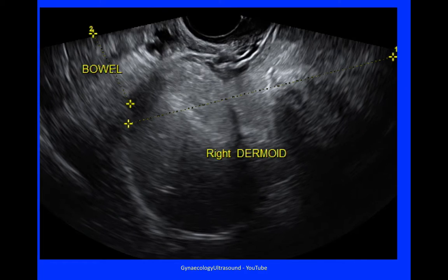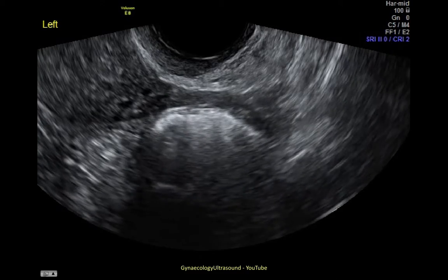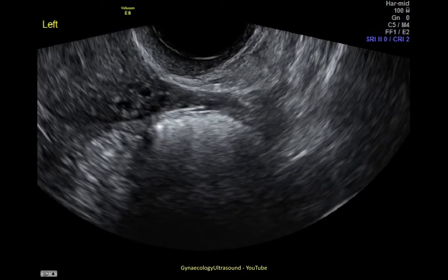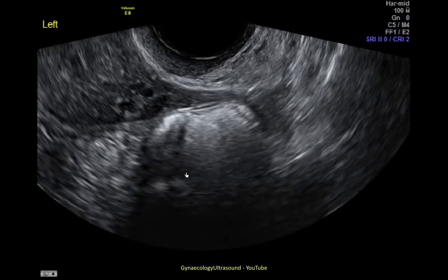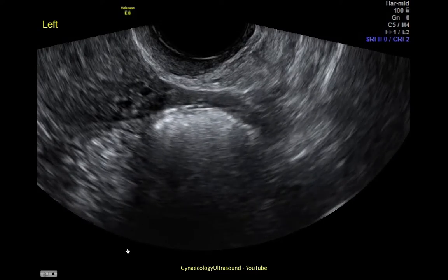A dermoid can mimic bowel. This was a 140mm dermoid — it was unilocular with mixed echogenicity and minor vascularity. You can see that there's bowel next to it; this is the dermoid and here is some bowel, and the echogenicity is very similar. The difference is that you can often see peristalsis in the bowel. In this case, the patient had normal ovaries but some bowel in the adnexal area. On closer inspection, there was active peristalsis, so this was not a dermoid.